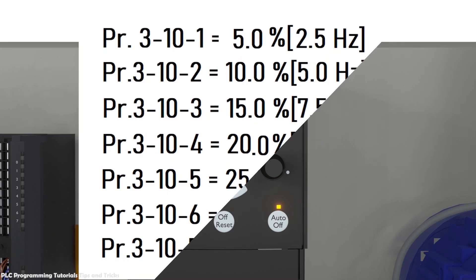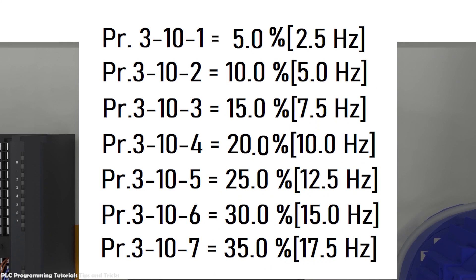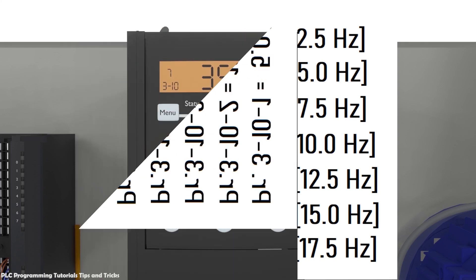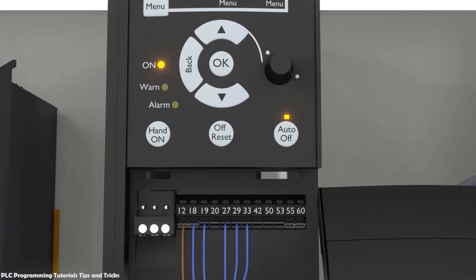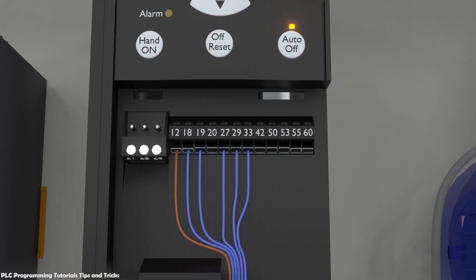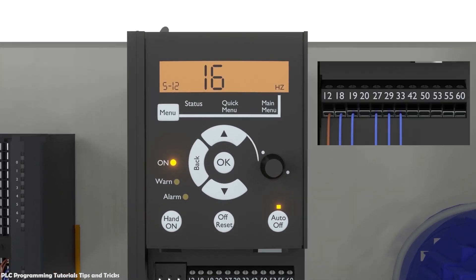We have entered seven different preset frequency references in the VFD. Now the question is how we can select these different frequency references using the PLC digital output signals. We can select the frequency references using the digital inputs of the VFD. There are three input terminals: 27, 29, and 33. We have to configure these terminals to preset reference selection bits. We will set parameter 5-12 to 16, which sets terminal 27 as preset bit 0.